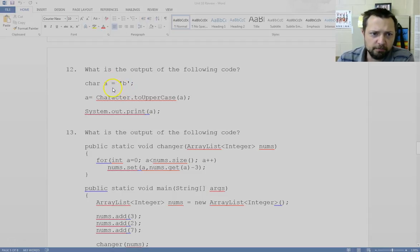A equals b. A equals character.toUpperCase. So a becomes the uppercase version of itself. It stores a b, so it becomes the uppercase b.